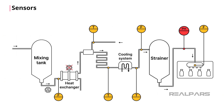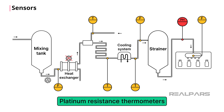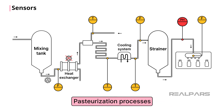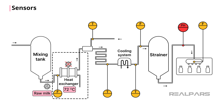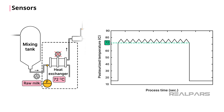Many different sensors are used in milk production facilities to ensure quality and flavor. Platinum resistance thermometers, called RTDs, are used within pasteurization processes due to their high accuracy and stability over time. Pasteurization requires raw milk to be heated to specific temperatures to kill harmful bacteria. Regulations require a temperature of 72 degrees Celsius to be reached and held for 15 seconds, enough to kill any bacteria. Even slight deviations from these parameters can render the milk product unsafe or ruin its taste.